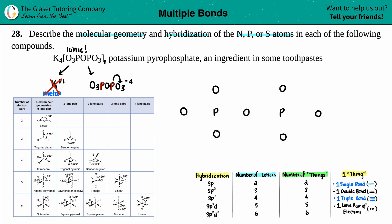Now let's draw the valence electrons. Oxygen has six valence electrons, so I'm going to draw six dots around each oxygen. Each phosphorus has only five valence electrons because it's in group 5A, or group 15. So I place five dots around each phosphorus.